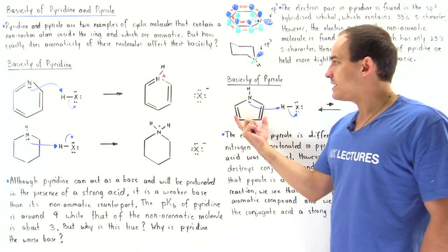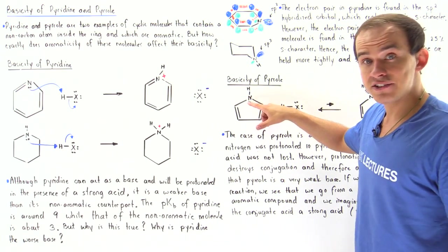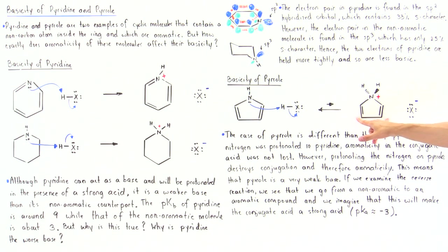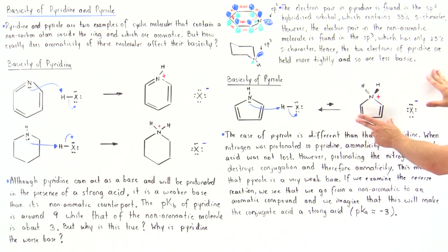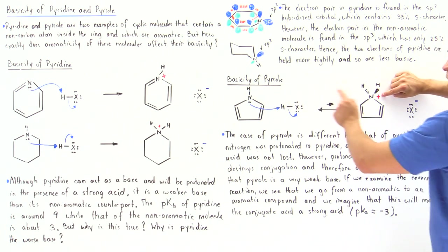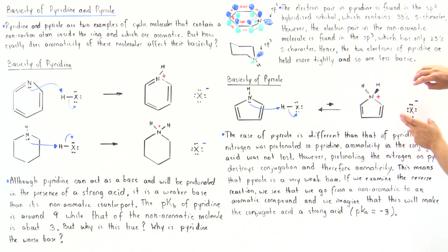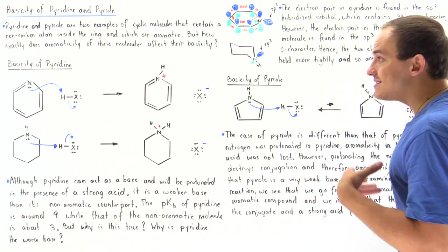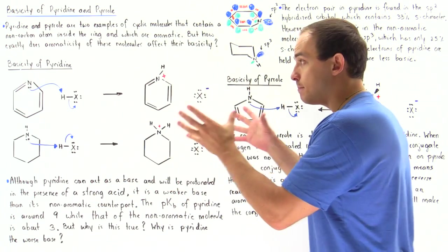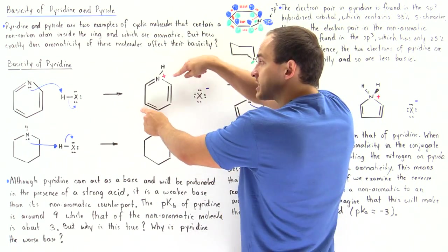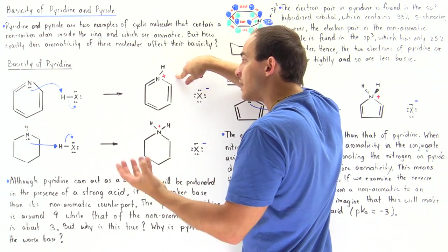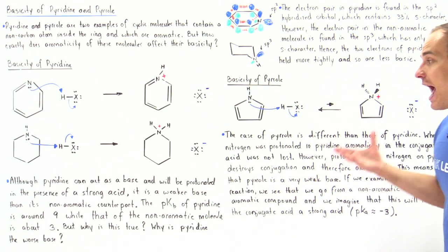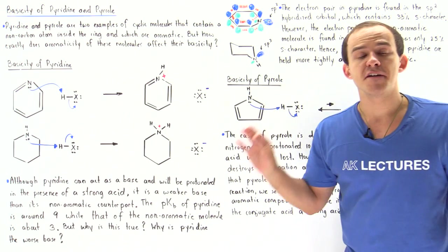If we take pyrrole, which can act as a base because the nitrogen has a lone pair of electrons, and place it in the presence of a strong acid, we get a conjugate acid that contains a positive charge on the nitrogen as well as the extra H atom. The case of pyrrole is slightly different than pyridine, because in pyridine the formation of the conjugate acid did not cause a loss of aromaticity — but in pyrrole's case, we do have a loss of aromaticity. And because of this, pyrrole will be a very, very weak base.